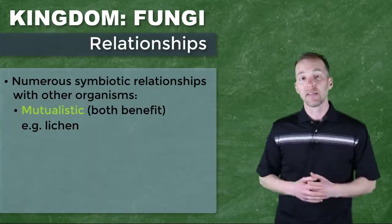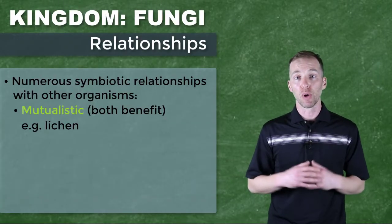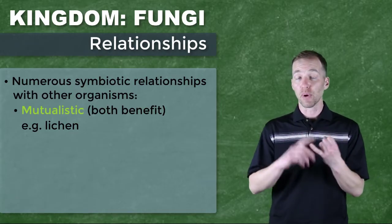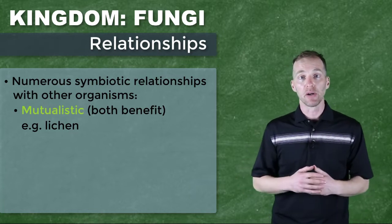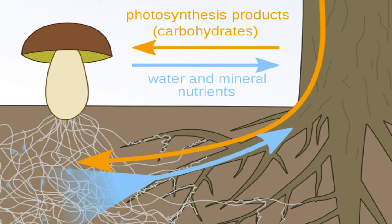One such mutualistic relationship exists in a class of organisms called lichen. Lichen is a mutualistic symbiotic relationship between a fungus, which serves as the structural component, and a photosynthetic component, which could be a protist or a bacterium. Another mutualistic relationship between fungi and plants exists in the soil, where there is a close relationship between the root system of plants and surrounding soil fungi, in which the fungi acquire minerals and nutrients and pass them to the plant, while the plant in turn gives nutrients from photosynthesis back to the surrounding soil fungi.